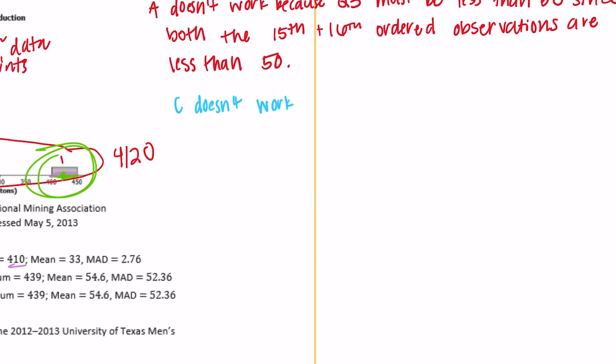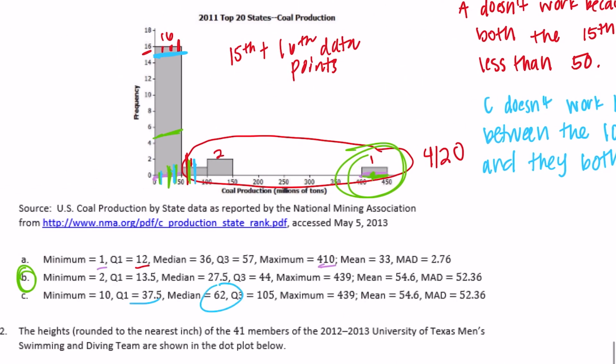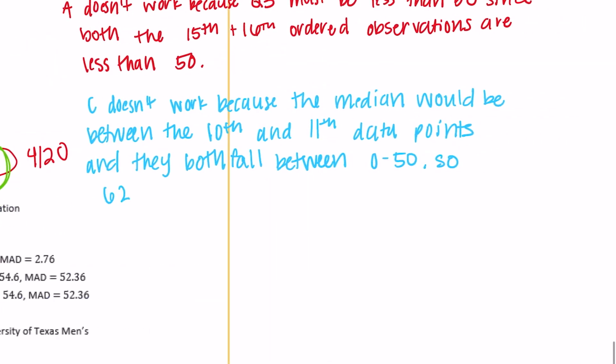C doesn't work because the median would be between the 10th and 11th data points and they both fall between 0 and 50, so 62 is too high.